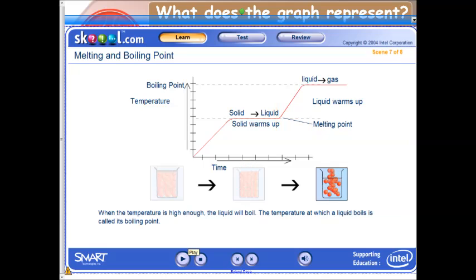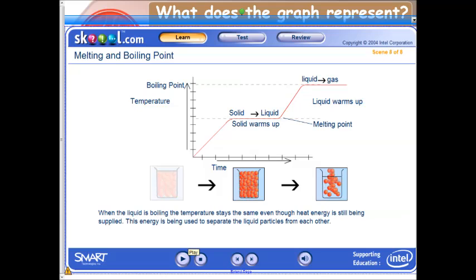When the temperature is high enough, the liquid will boil. The temperature at which a liquid boils is called its boiling point. When the liquid is boiling, the temperature stays the same, even though heat energy is still being supplied. The energy is being used to separate the liquid particles from each other.